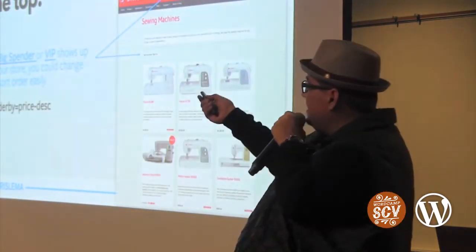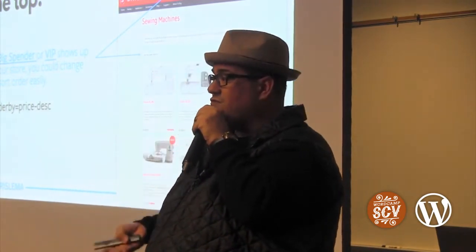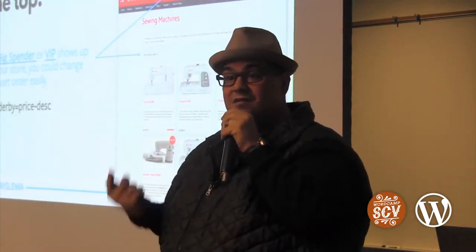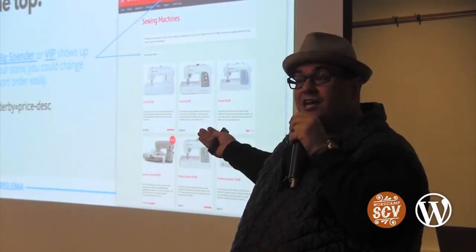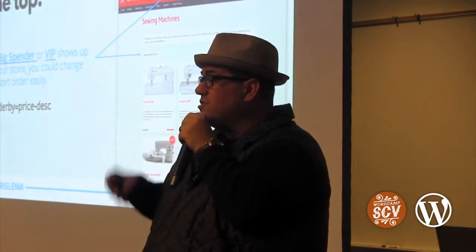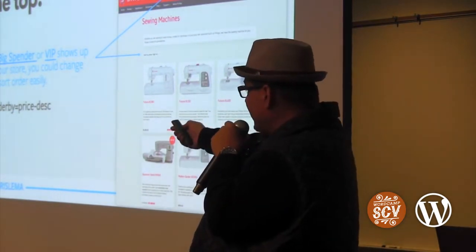What about big spenders or VIPs? Shouldn't I make sure my products sort so the ones I really want them to spend on are at the top? It's easy: add '?orderby=price&order=desc' to the URL — put your most expensive products at the top. You can do that when writing an email to big spenders: when they click the link, the most expensive products are at the top. A big spender doesn't want to start by looking at your cheap ones or clicking next and next through random ordering — bring it right to the top. It's just a little URL string.